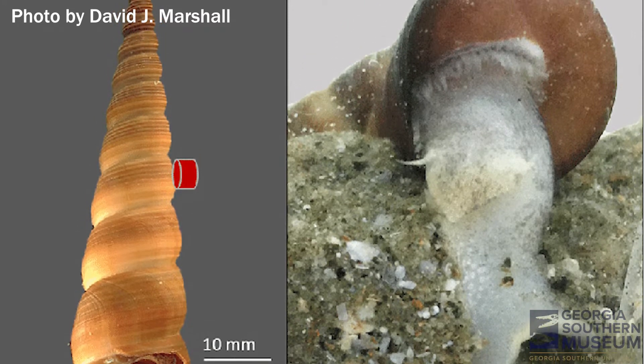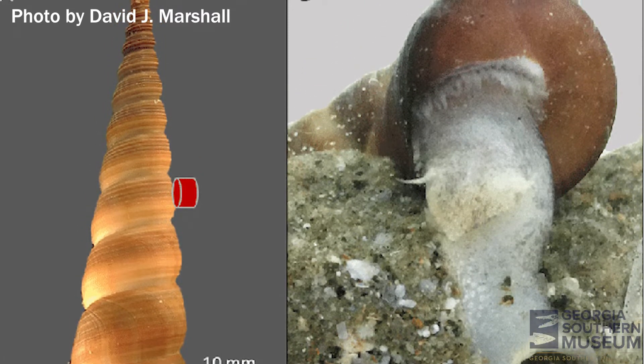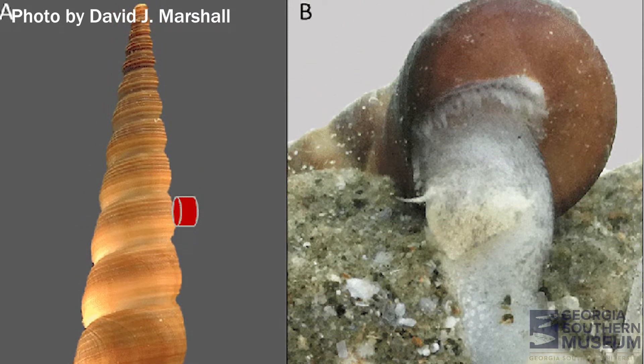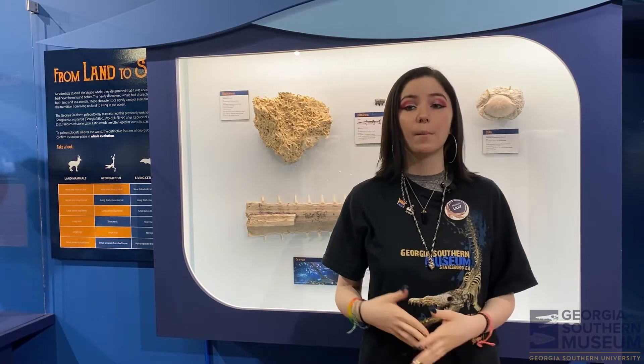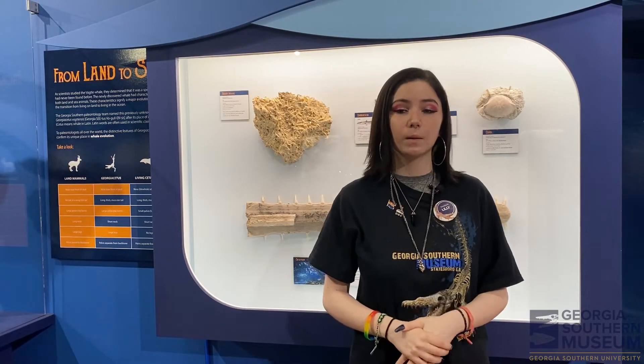Terratella shells are elongated, tightly coiled, and conical shaped. Terratelline gastropods are an incredibly important group — they are very diverse, abundant, and widespread. This makes them useful for biostratigraphy. Biostratigraphy uses fossils to establish the relative ages of rock. They have been around for 130 million years.